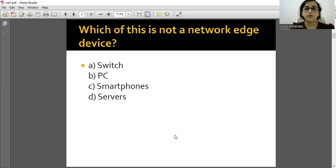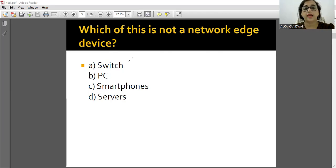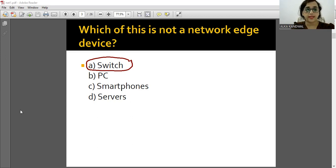Which of the following is NOT a network edge device? The answer is Switch - option A is correct. Switch is a networking device but it is not a network edge device.